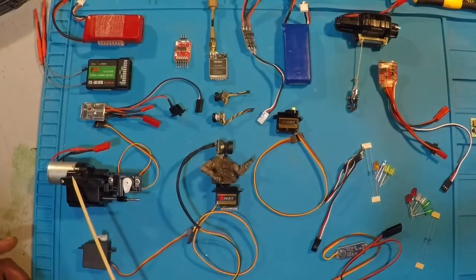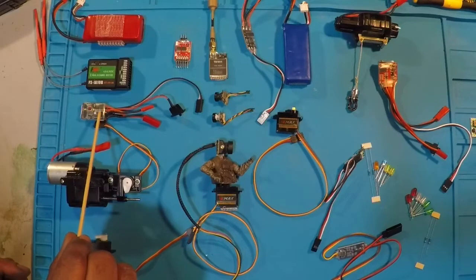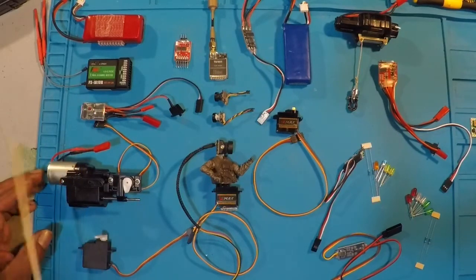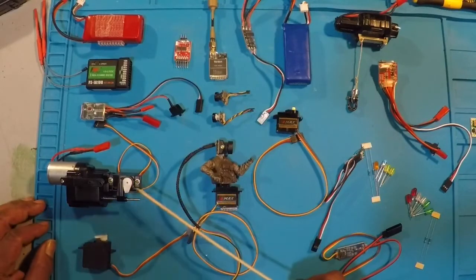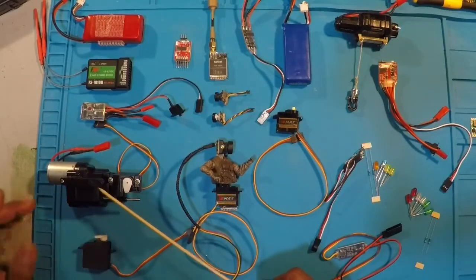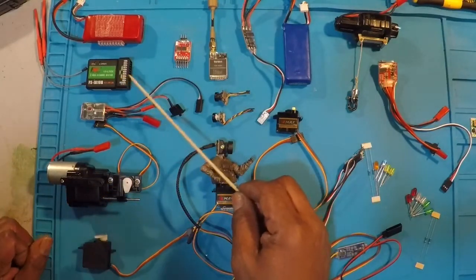On channel two, you've got the usual ESC that is going to run our main drive motor. We're going to be using a two speed motor. So the servo to switch speeds is going to be operated by channel three.